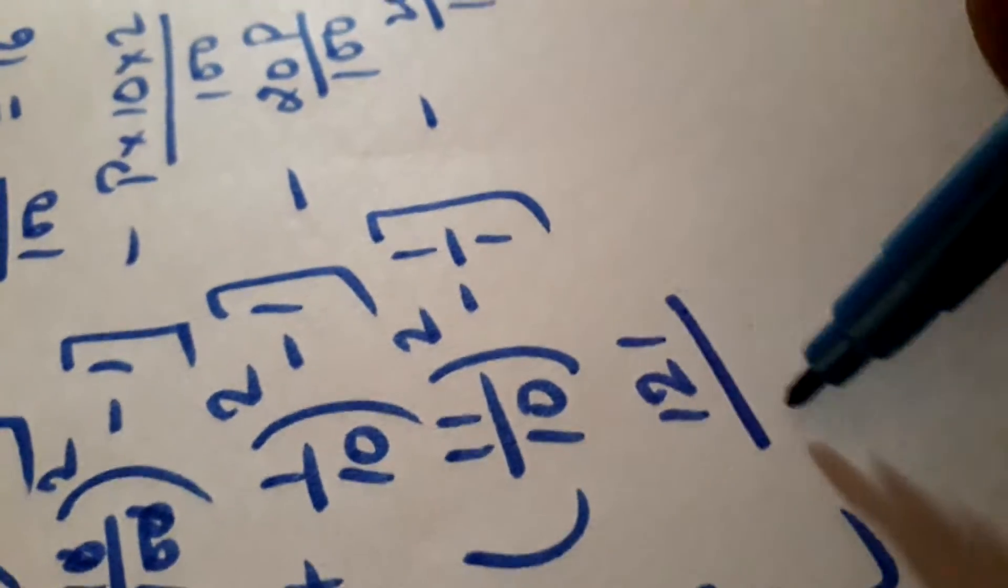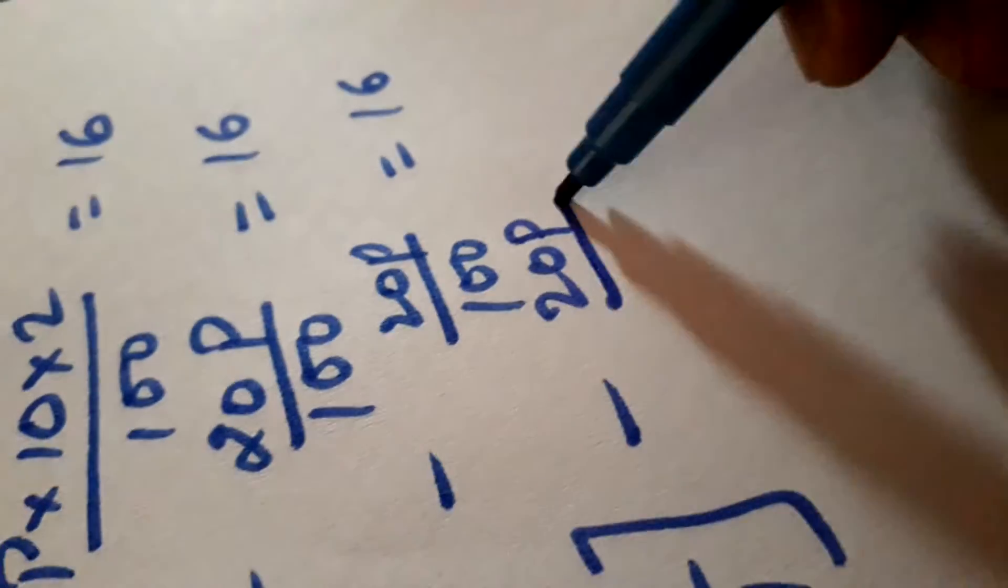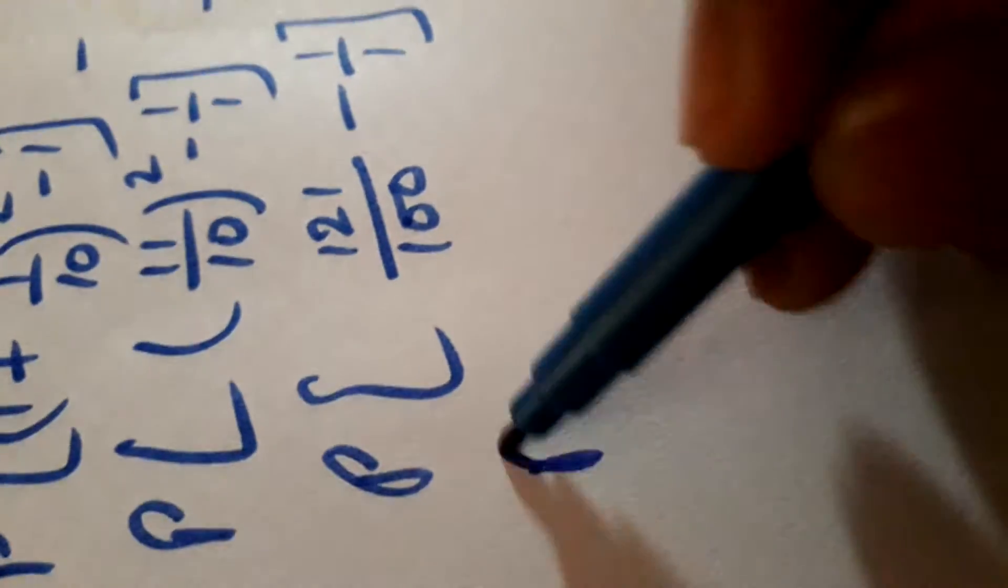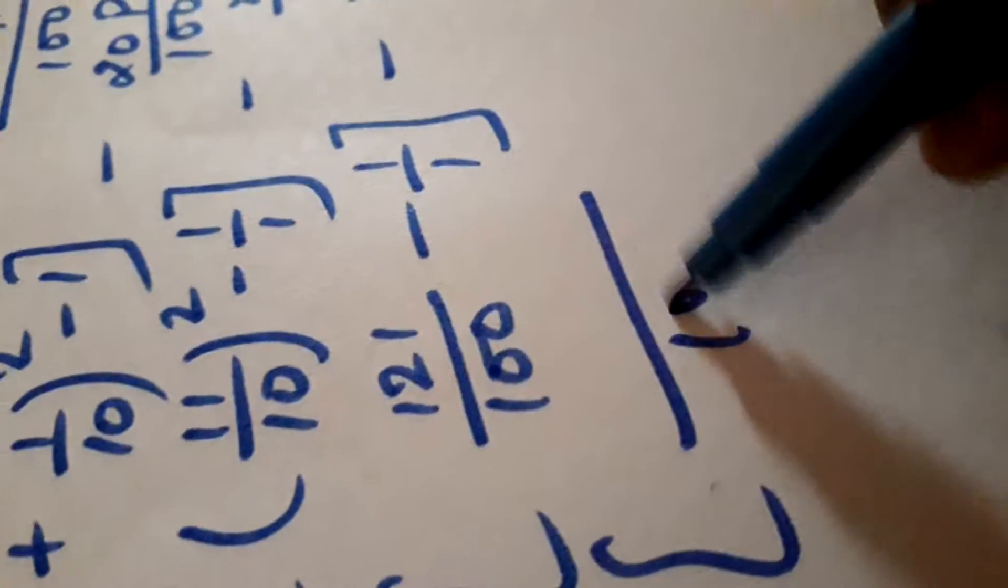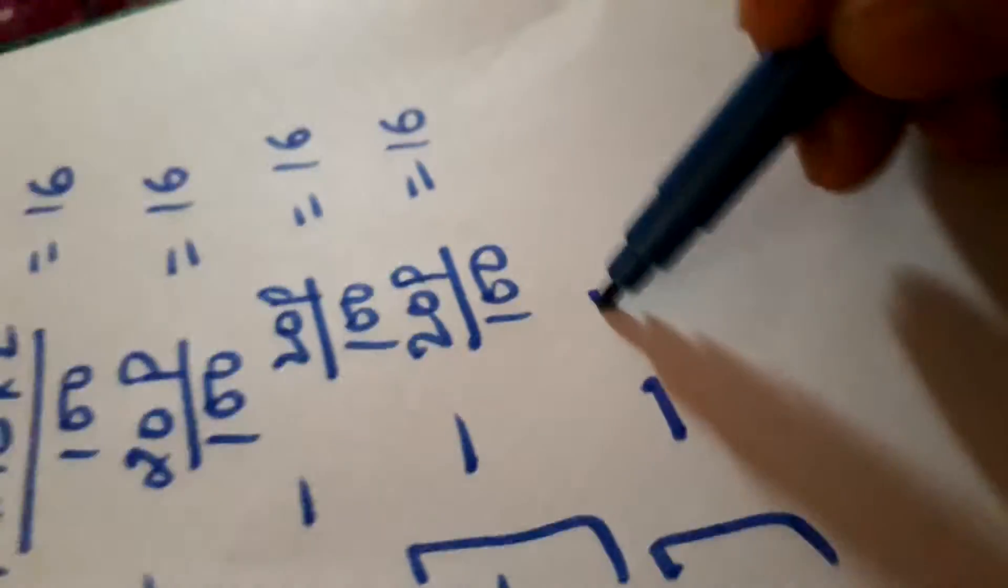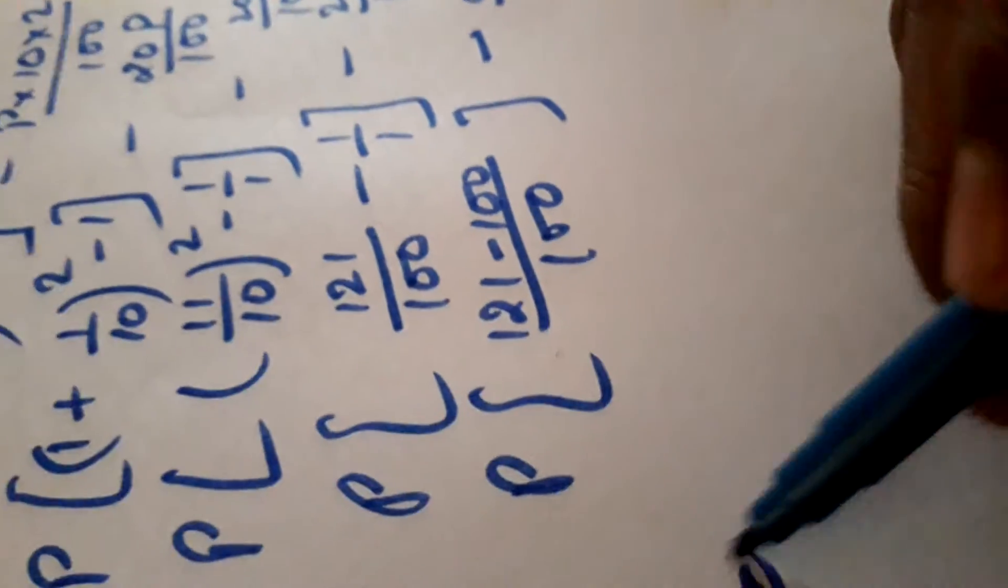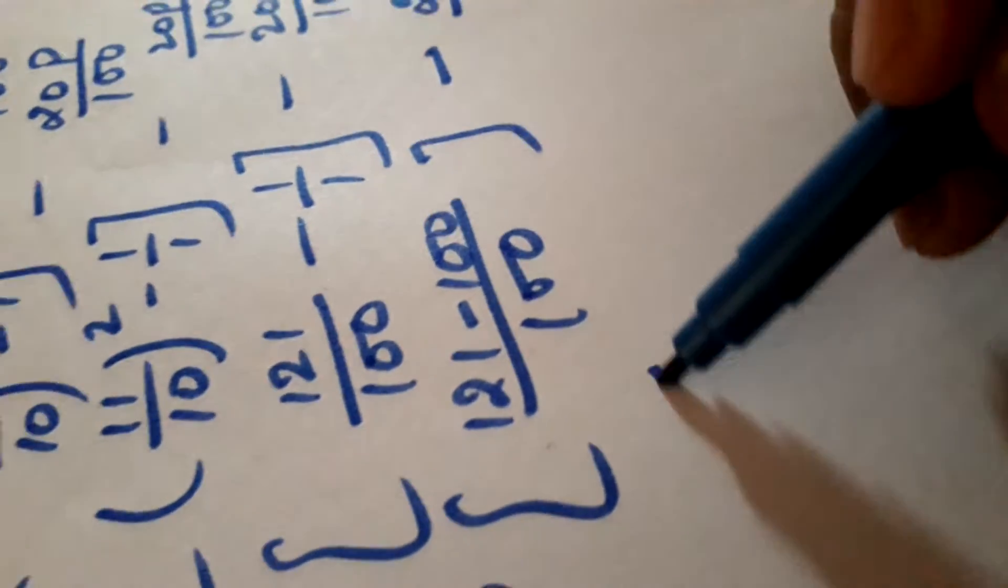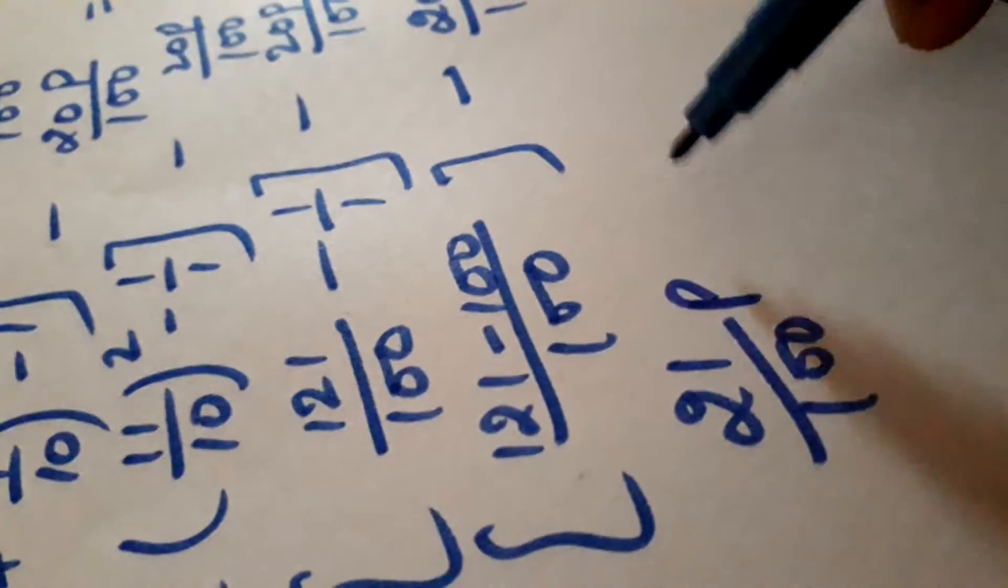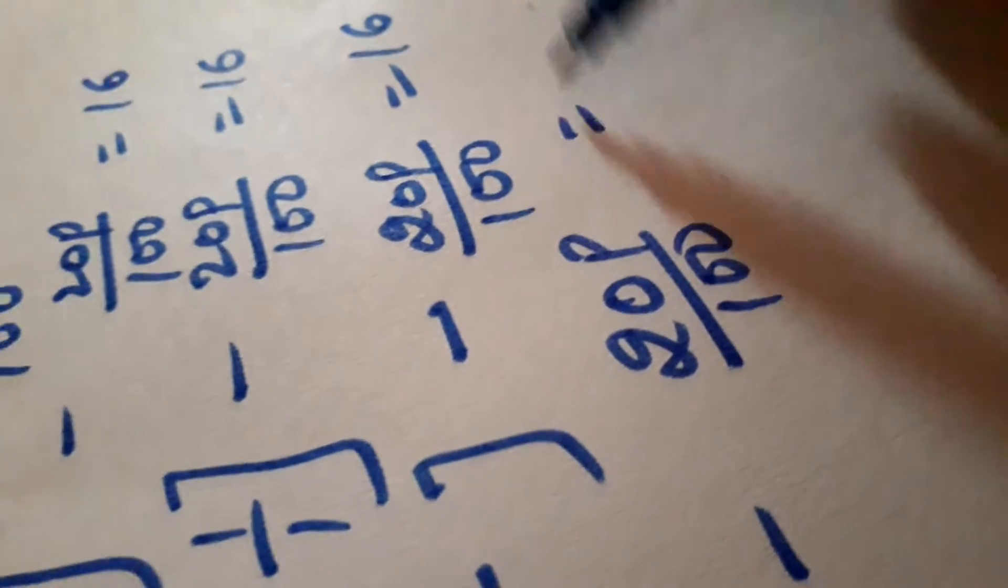P, square of 11 is 121, square of 10 is 100 minus this, minus 20P upon 100 is equal to 16. Again we take LCM here 100. It becomes 121 minus 100 minus 20P upon 100 is equal to 16. We get 21 upon 100P minus 20P upon 100 is equal to 16.